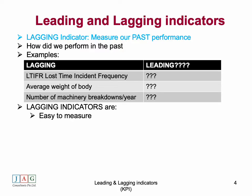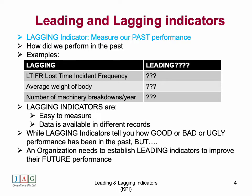Lagging indicators are easy to measure because you can obtain incident data from incident reports and breakdown data from breakdown and failure reports — the data is easily available in records. Lagging indicators tell us how good, bad, or ugly the organization has been in the past, but for an organization to improve in the future, they certainly need a balance between leading and lagging indicators.